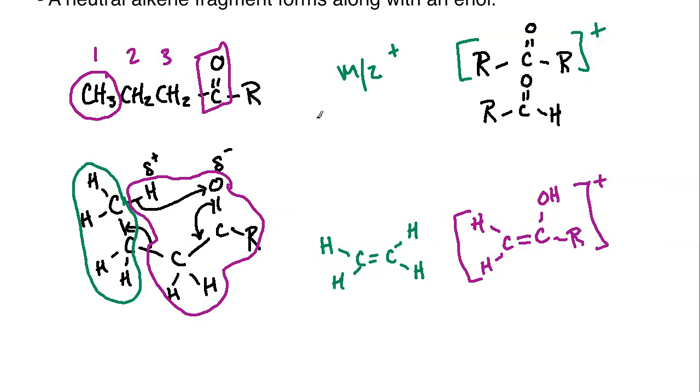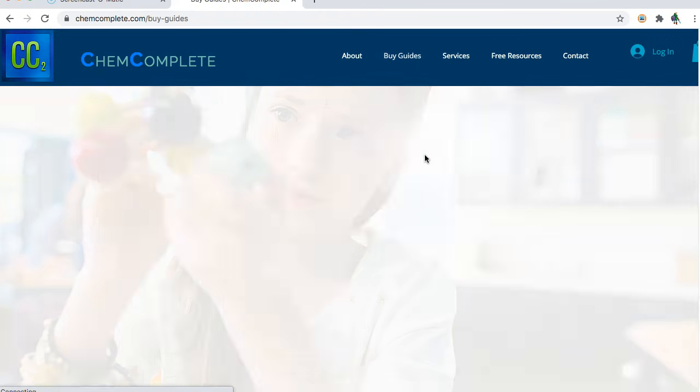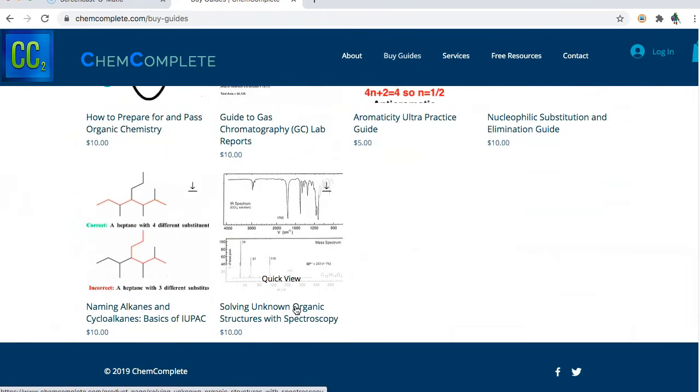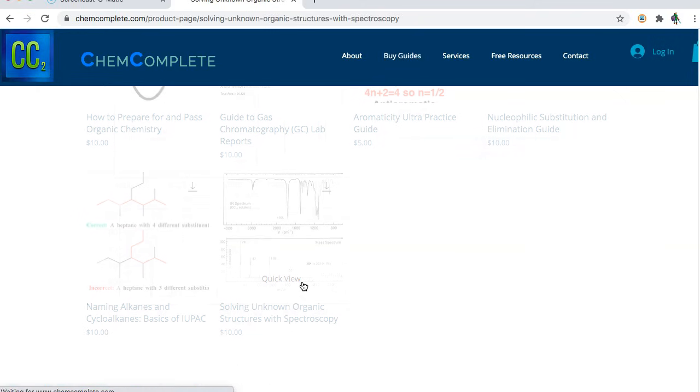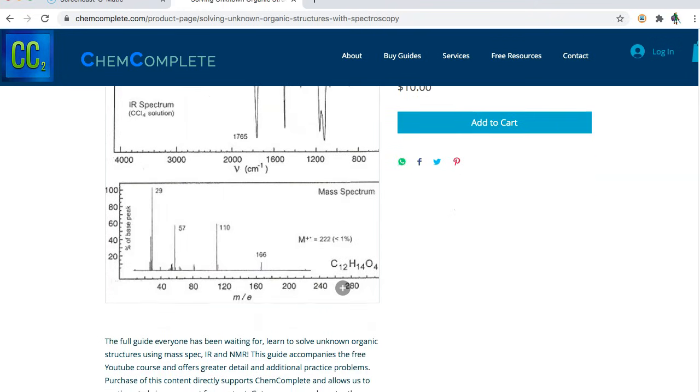And if you're interested because maybe you're in a class or you just would like to learn more, if you head over to chemcomplete.com at our website and you go over to our guides, I have a full comprehensive guide that doesn't just look at mass spec but it also looks at tying mass spec into IR, NMR, both C-13 and H-1, and solving for unknown structures when you're coupling all of these together.